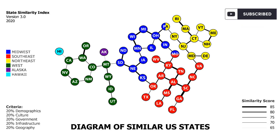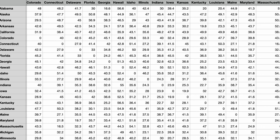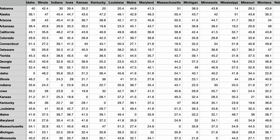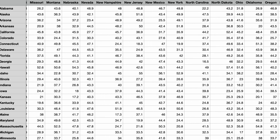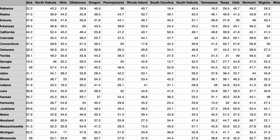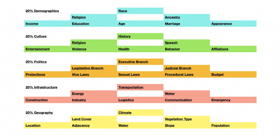Analyzing the relationships between states can further one's understanding of America. The data from the State Similarity Index was used to determine the two most similar states to each state. It weighs equally five major aspects of states: their demographics, culture, politics, infrastructure, and geography.